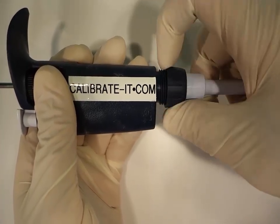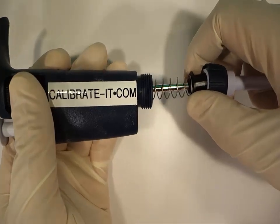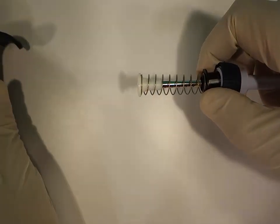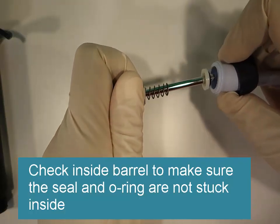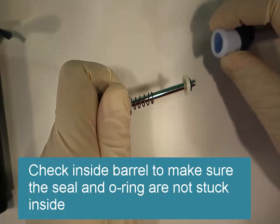Remove the barrel by unscrewing the collar like this. Carefully remove the piston assembly, making sure all the parts are removed together. Lay the piston assembly aside to clean later. Rinse the barrel out with tap water and wipe the outside with a lab wipe.